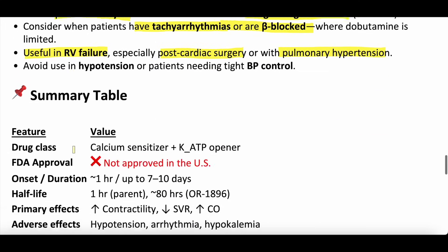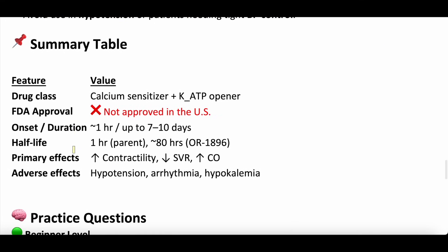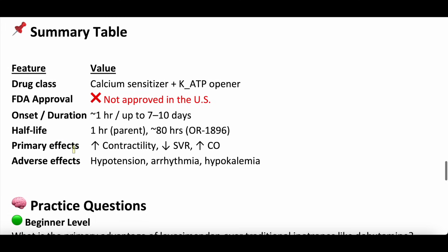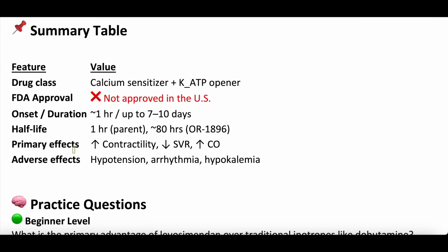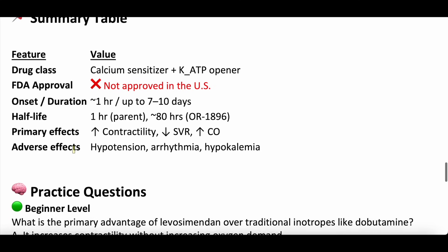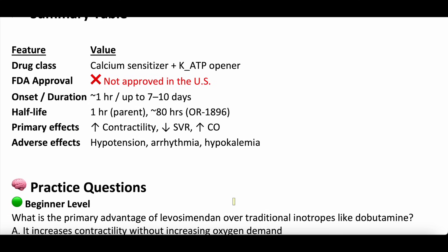Summary: levosimendan is a calcium sensitizer and also a potassium ATP channel opener. It is not FDA approved in the US, although approved in more than 50 other countries. It takes about an hour to kick in and can last 7 to 10 days in your system — a very long half-life. Its primary effects are increasing contractility, increasing cardiac output, and decreasing systemic vascular resistance and mean arterial pressure. Adverse effects include hypotension, hypokalemia, and arrhythmia.